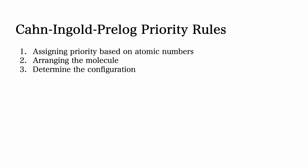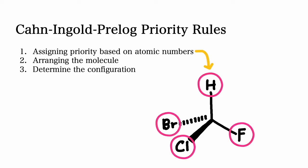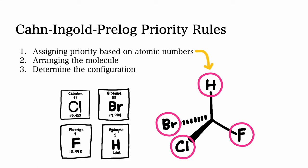There are three main rules associated with this system. The first rule is that you need to assign priority to each of the four groups based on the atomic numbers.